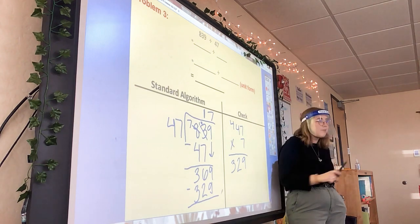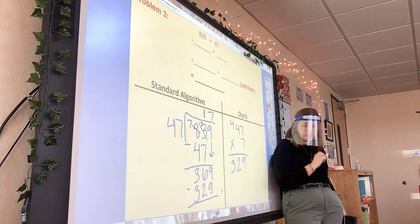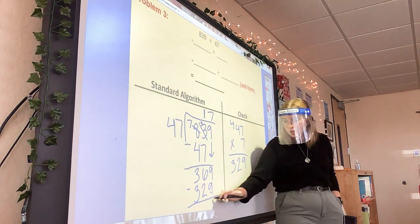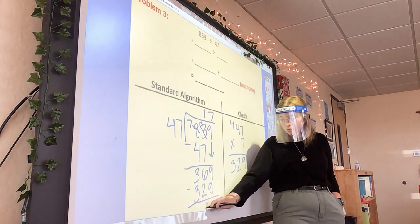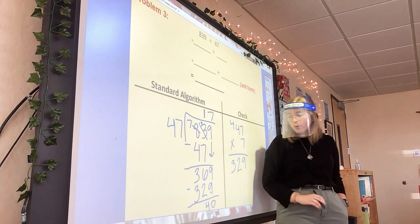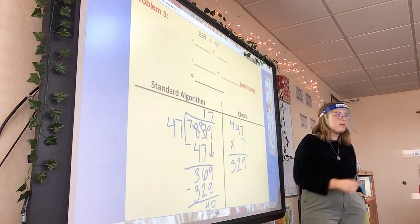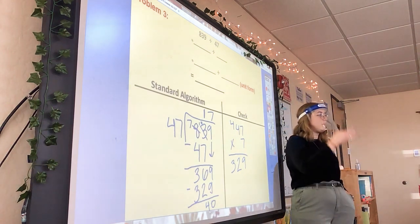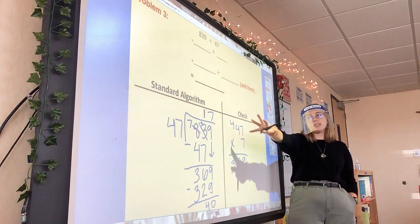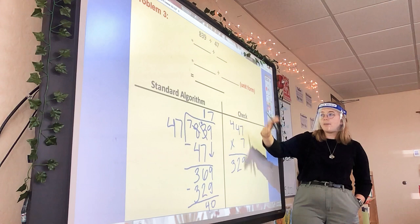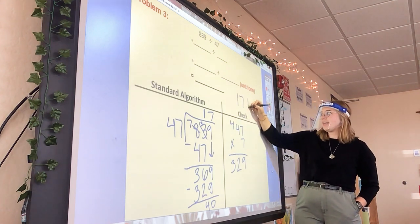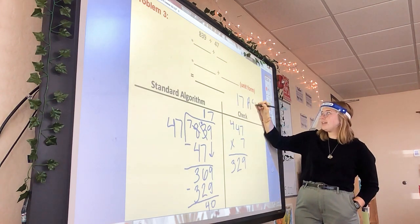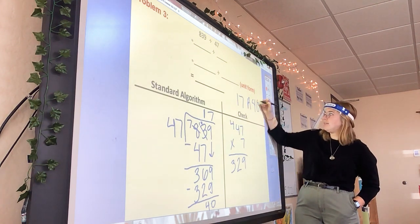Can I add one more 47? No — I need 40 more to get from 329 to 369, so it would be too big. So 47 times 7 is what I'm going with. 9 minus 9 is 0, 6 minus 2 is 4. And remember, my remainder cannot be bigger than my divisor — so I'm in the clear. My answer is 17 remainder 40.